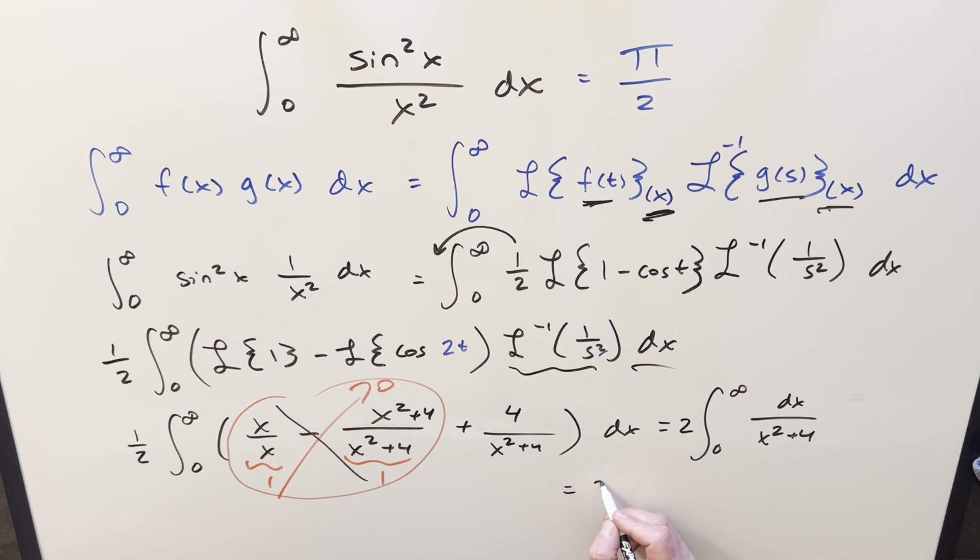And then this right here, just the arctan formula, so we're going to have 2. Let's look at this like, this will be like 2 squared, so this is going to be like 1 half in front, arctan, x over 2, evaluated from 0 to infinity.